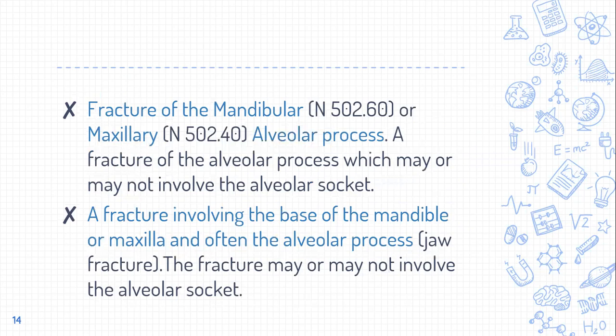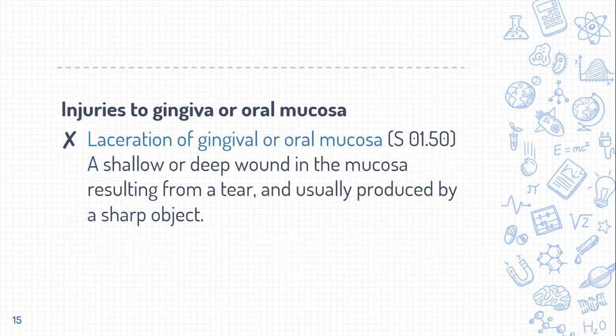Next is fracture of the mandibular or maxillary alveolar process — a fracture which may or may not involve the alveolar socket. This can be identified radiographically as a complete block with tooth mobility. Finally, a fracture involving the base of the mandible or maxilla — essentially a jaw fracture — which may or may not involve the alveolar socket.